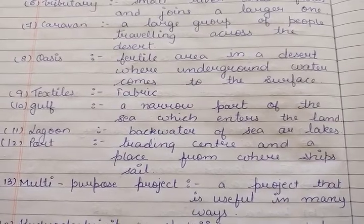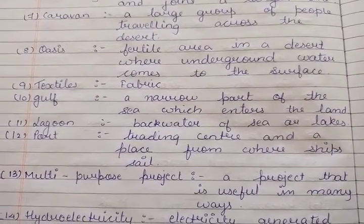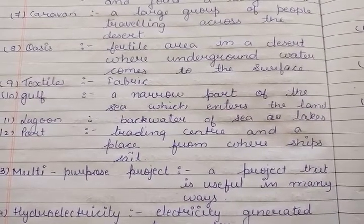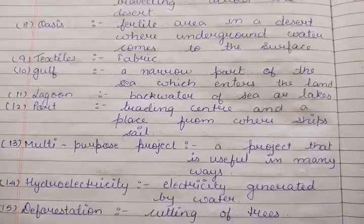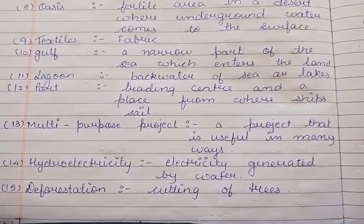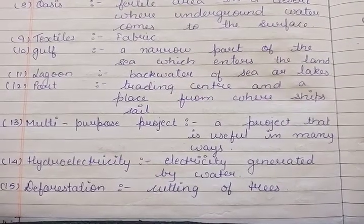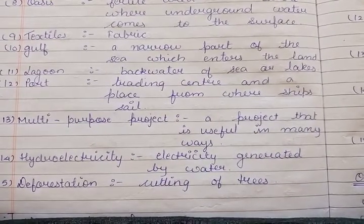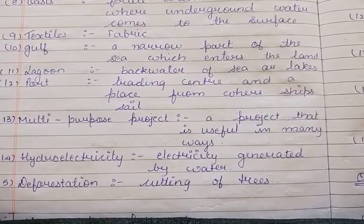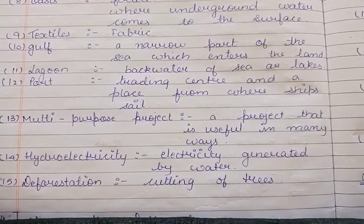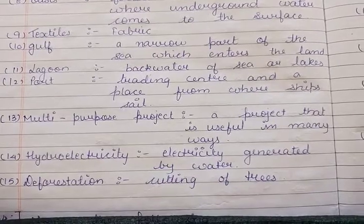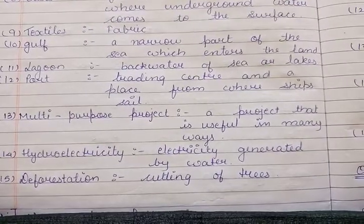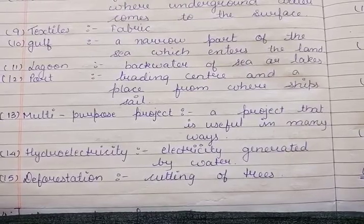Twelfth, port is a trading center and a place from where ships sail — a place where ships come in, trading happens, and cargo lands. Thirteenth, multi-purpose project is a project that is useful in many ways. Fourteenth, hydro-electricity is electricity generated by water. Electricity generated through water is called hydro-electricity. Fifteenth, deforestation is the cutting down of trees — clearing large areas of trees to create flat surfaces.